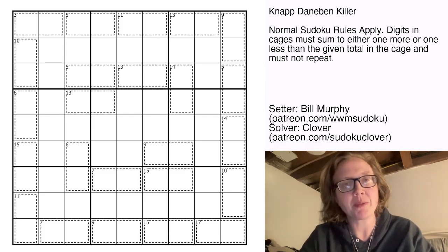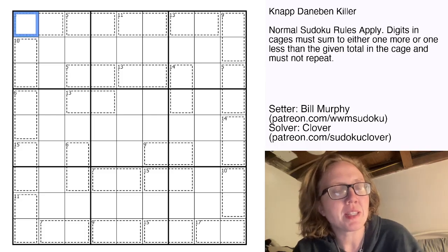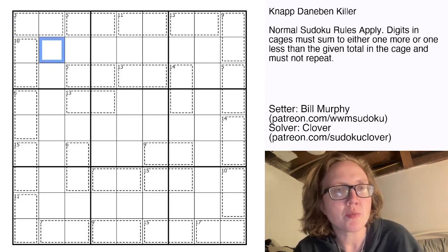We have normal Sudoku rules, so we're placing the digits 1 through 9 once each in each row, each column, and each outlined 3x3 region.